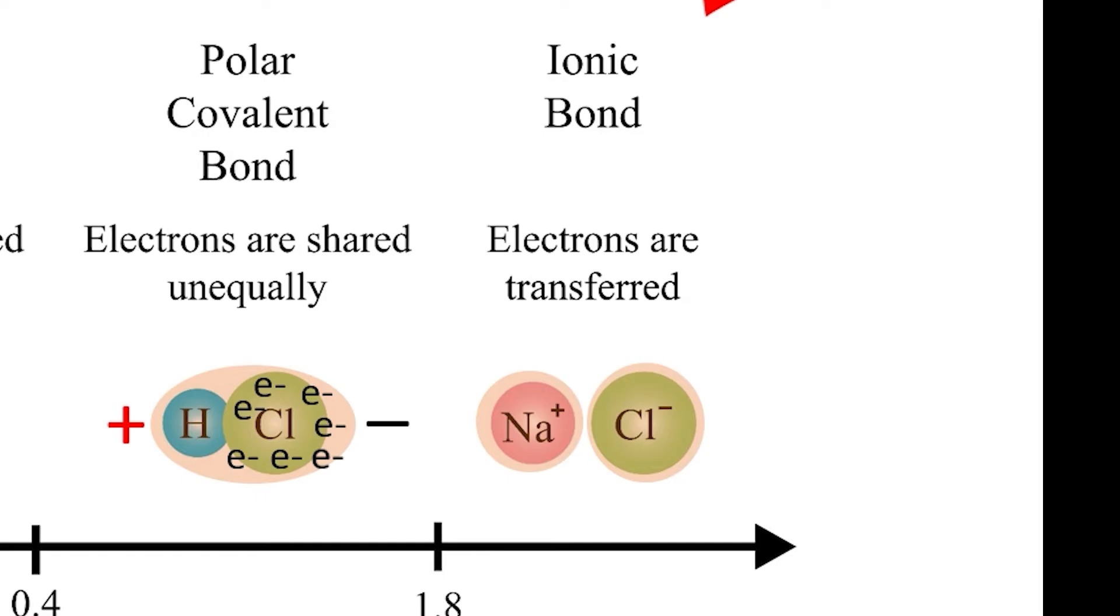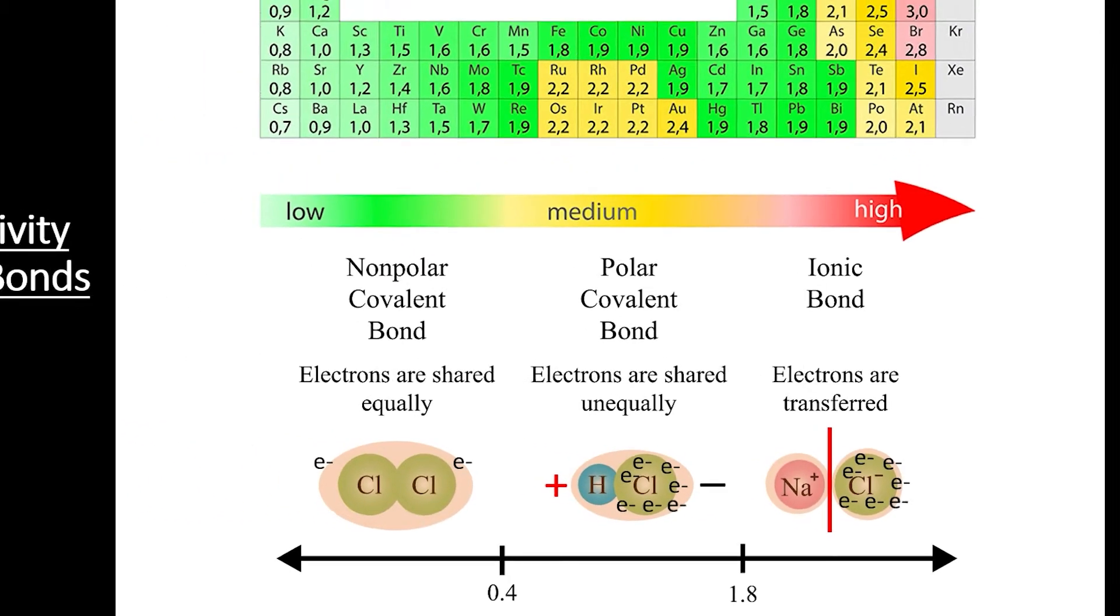Instead of sharing electrons, one atom will steal the electrons while the other loses them. In a polar covalent bond, some electrons may occasionally orbit the less electronegative atom. But in an ionic bond, the electrons never return to the less electronegative atom. This results in individual ions instead of bonded molecules.